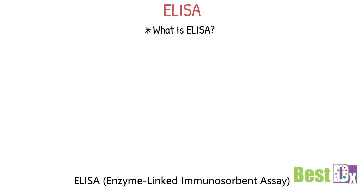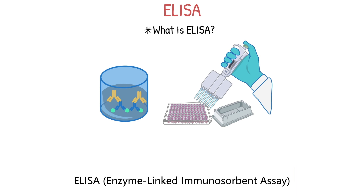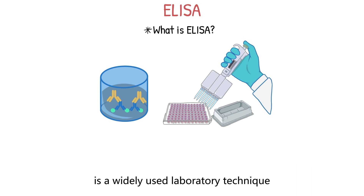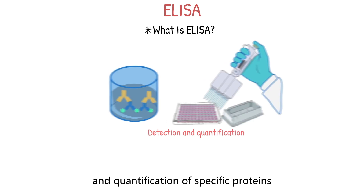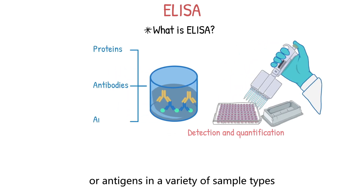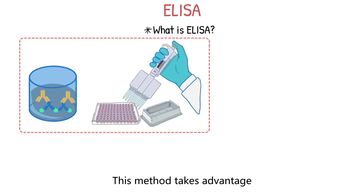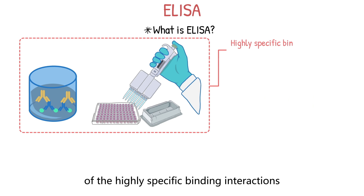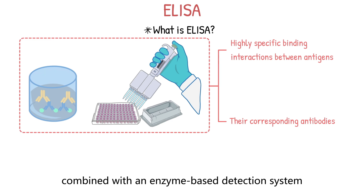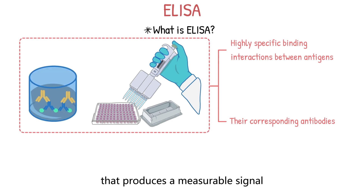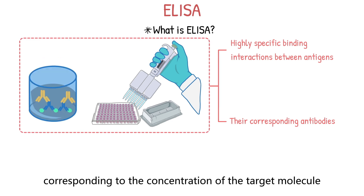ELISA, or enzyme-linked immunoabsorbent assay, is a widely used laboratory technique that allows for the detection and quantification of specific proteins, antibodies, or antigens in a variety of sample types. This method takes advantage of the highly specific binding interactions between antigens and their corresponding antibodies, combined with an enzyme-based detection system that produces a measurable signal corresponding to the concentration of the target molecule.